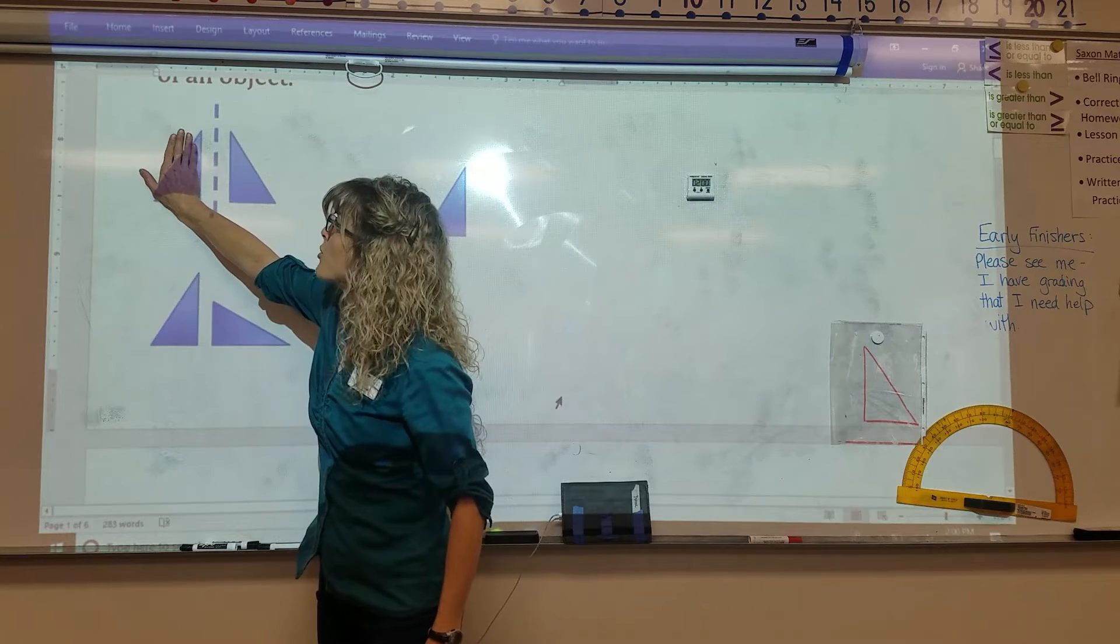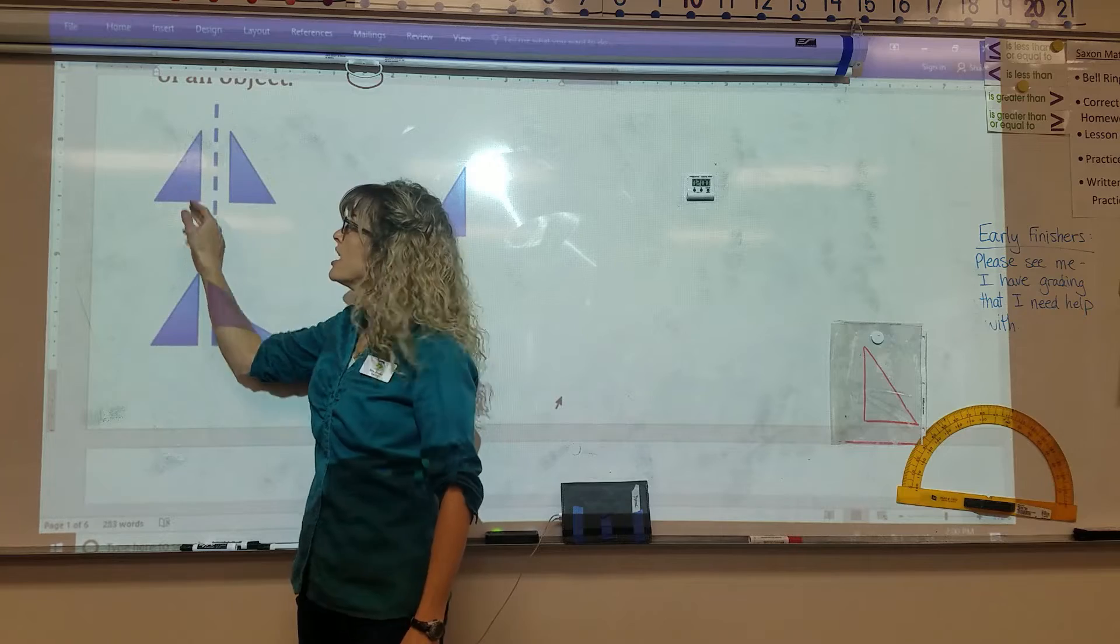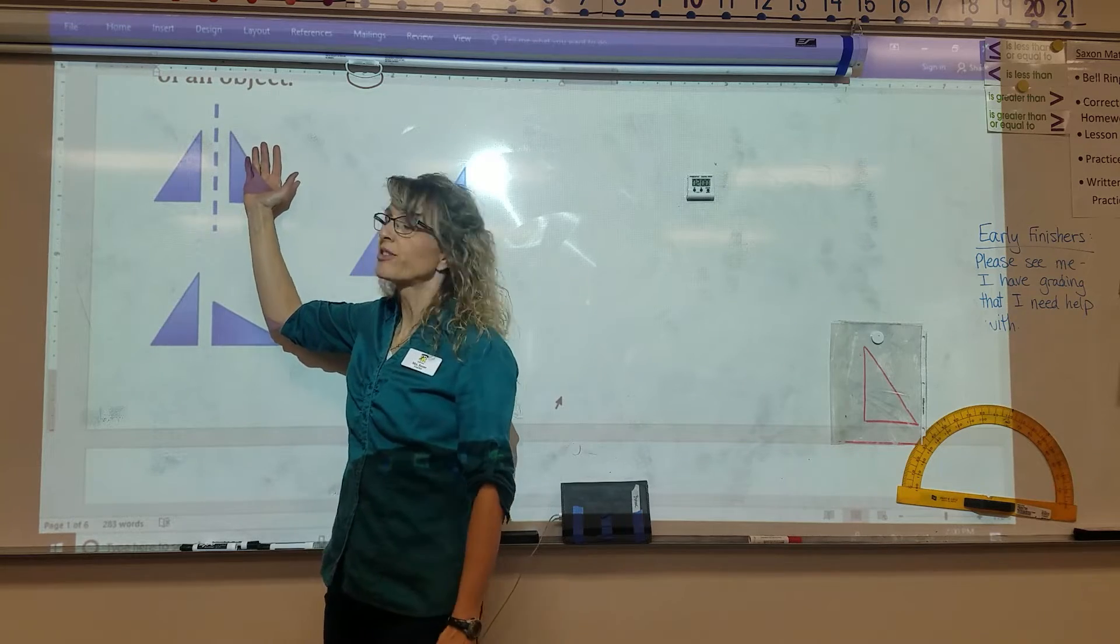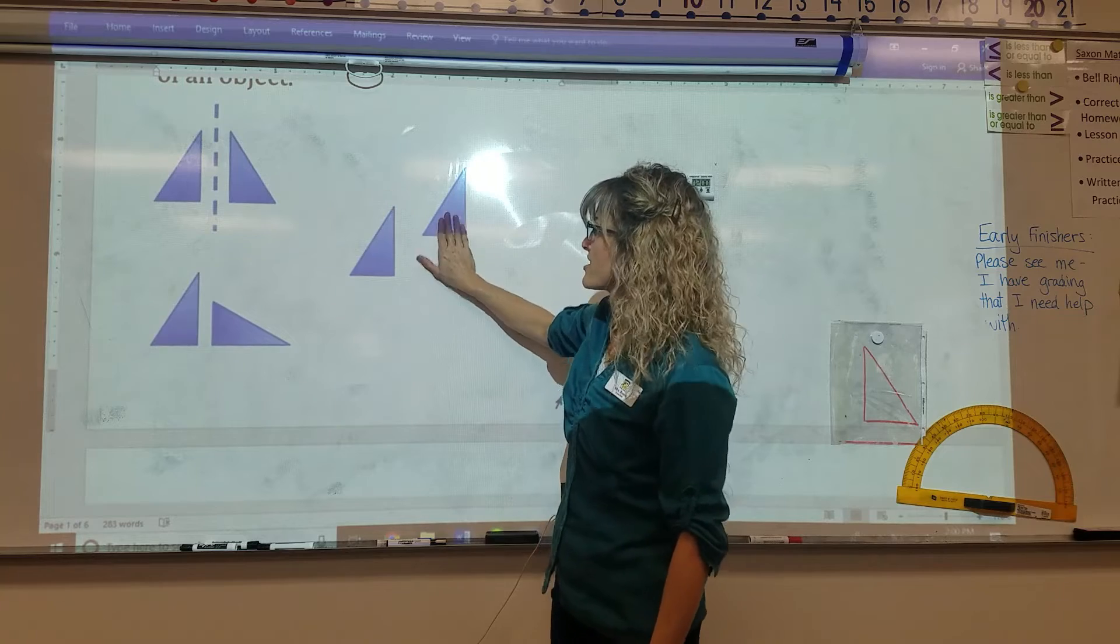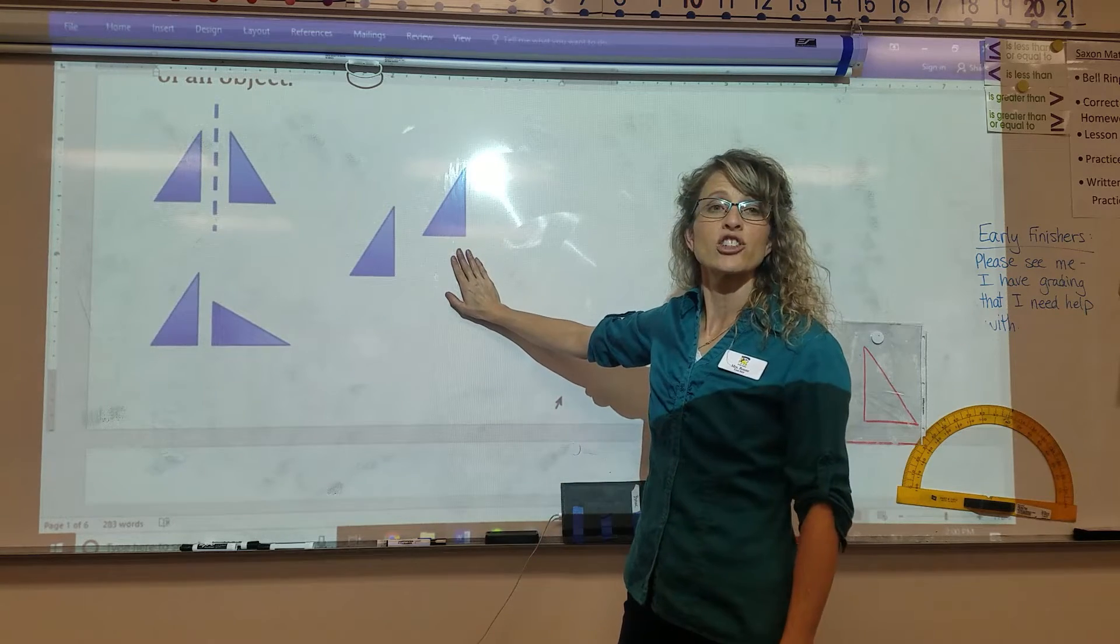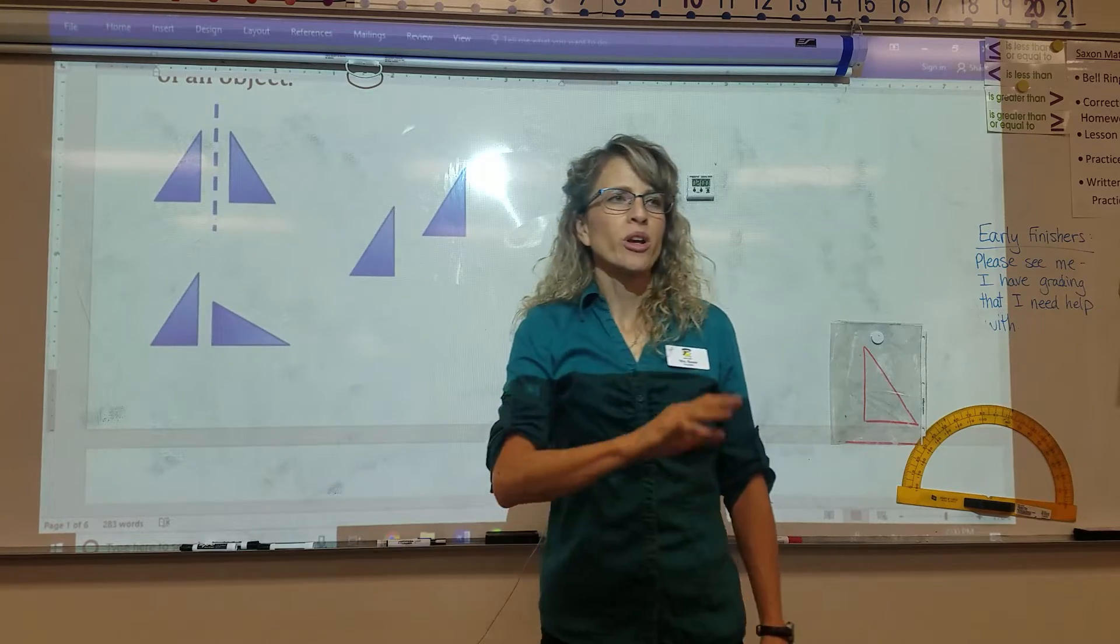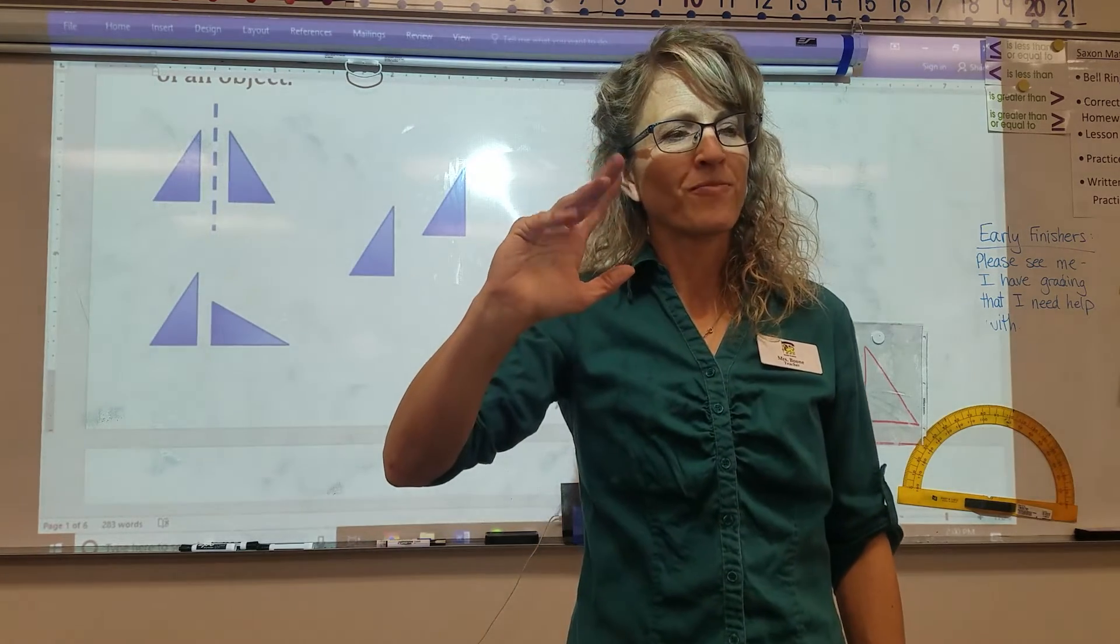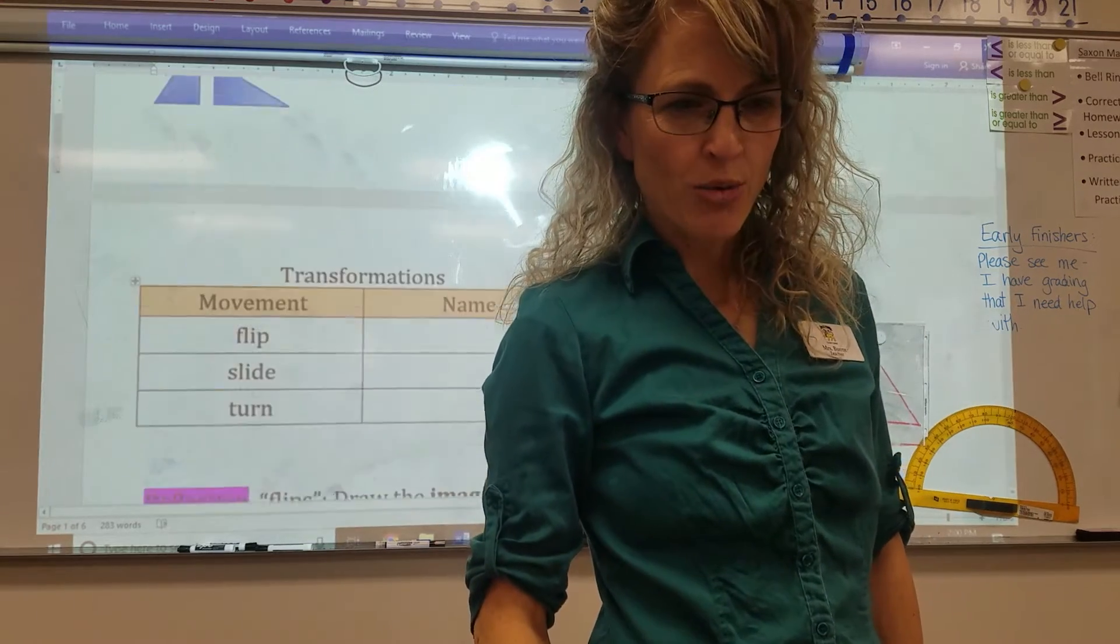This is a reflection. This triangle was reflected over the dotted line. This is the axis of symmetry or line of symmetry. So it's a reflection. We also call it a flip. This triangle was slid over. It slid to the right and it slid up. A slide is called a translation. And then this triangle was rotated, or we also call it turned. A rotation.